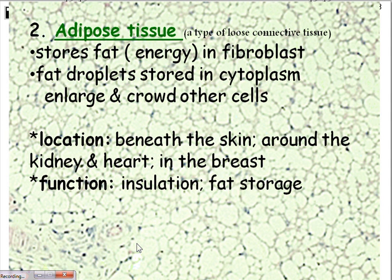Connective tissue also includes adipose tissue — our fat cells. This is what stores our energy, actually within the fibroblast cell, where fat droplets are stored in the cytoplasm. They enlarge and crowd up with the other cells. Adipose cells don't undergo much mitotic division — they just gain more fat droplets. Location: beneath the skin, around the kidney and heart, and in the breast. Function: insulation and fat storage.